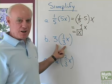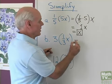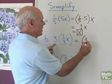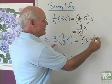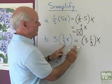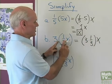Okay, next problem, 3 times 1/3x, same type of problem. Again, I'll apply the associative property. So I have 3 times 1/3 times x. So I change the grouping from here to here, and I can do that because it's all multiplication.